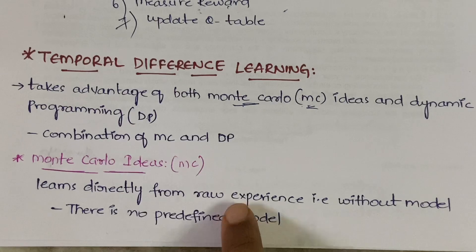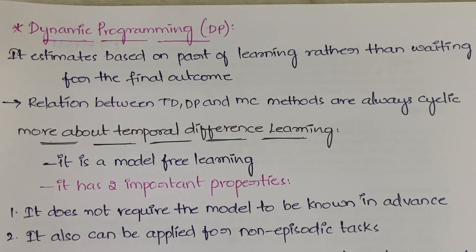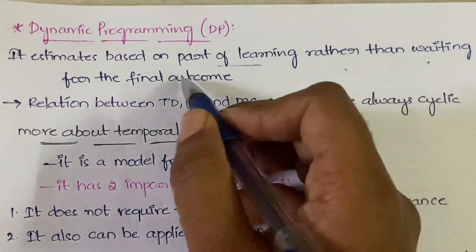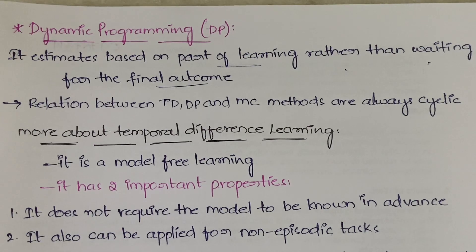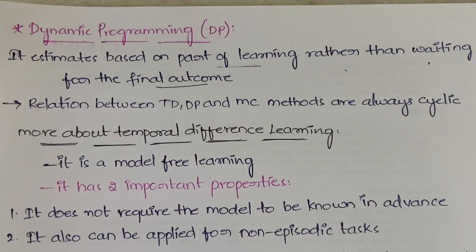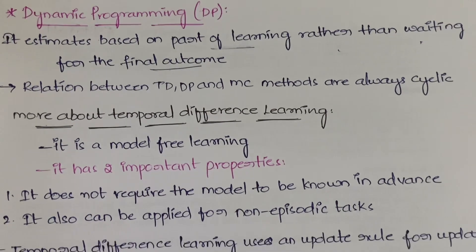Temporal difference also learns directly from experience rather than depending on a model. Dynamic programming estimates based on part of learning rather than waiting for the final outcome. It doesn't wait for the entire process to finish. Simultaneously the learning happens and estimation of the outcome also happens — how accurate it is, how many examples it satisfies — all done simultaneously while the model is learning.